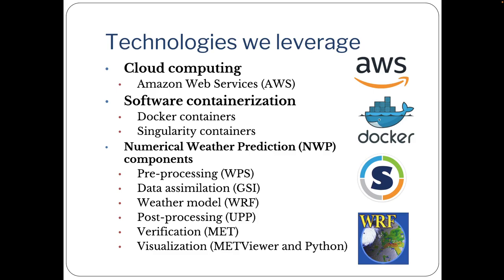So here are the specific technologies that we leverage to accomplish these goals in this tutorial. First, we have cloud computing, and we use Amazon Web Services, or AWS, for this framework. Then there's software containerization, and here we use Docker and Singularity. And then we have numerical weather prediction components — we include preprocessing, data assimilation, weather modeling, post-processing, verification, and visualization. We'll go into more details about each of these topics in the next slides.